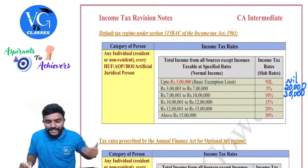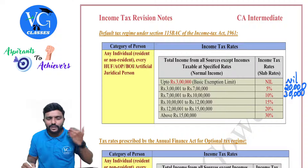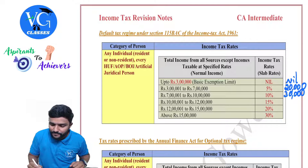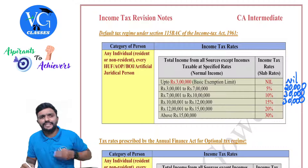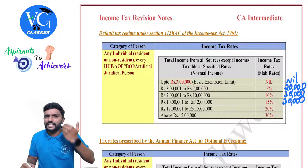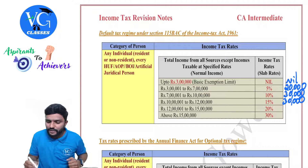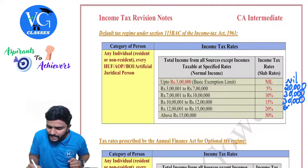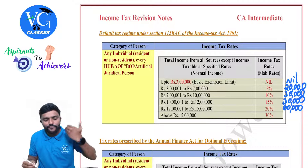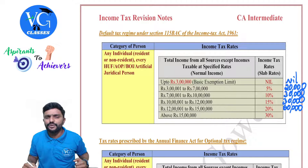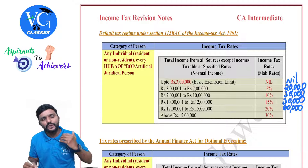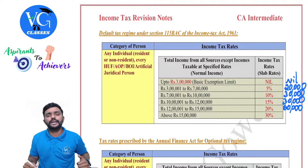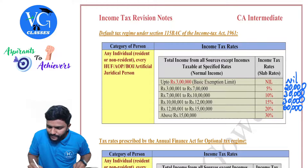Then from 10 lakh to 12 lakh, the difference is 2 lakh. On that, the tax rate is 15%, so it comes to 30,000. Then from 12 lakh to 15 lakh, the difference is 3 lakh at 20%, so the amount comes to 60,000. Above 15 lakh, the total income of the individual is 20 lakh, so the difference would be 5 lakh. On 5 lakh at 30%, that comes to 1 lakh 50,000.